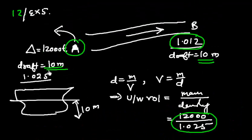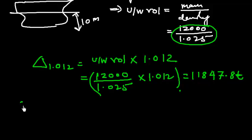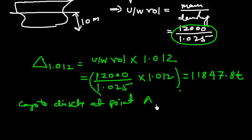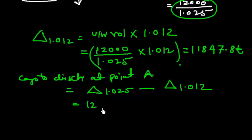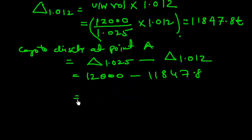How much cargo should be discharged at point A so that the draft doesn't exceed the limit? Cargo to discharge at point A equals displacement at 1.025 minus allowed displacement at 1.012. So 12,000 minus 11,847.8 equals 152.2 tons.